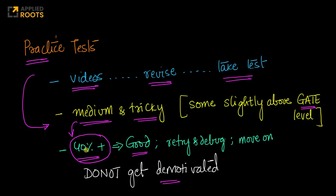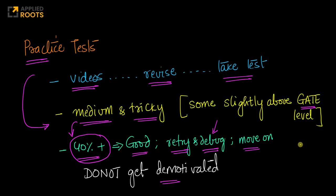What should you do next? Once you get 40% or more marks, retry all the questions that you made mistakes in — don't directly go check out the solution. Re-attempt the questions you were not able to solve in the first attempt. Even after retrying, if you're not able to solve it, debug. Understand whether you made a silly mistake, whether you have a conceptual gap, and try to understand why you could not solve those questions. Once you have debugged and retried, then move on to the next topic or the next set of topics.